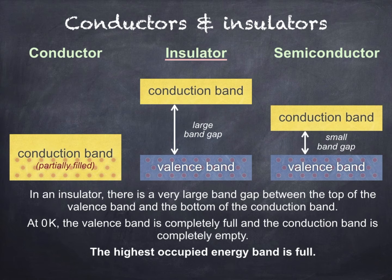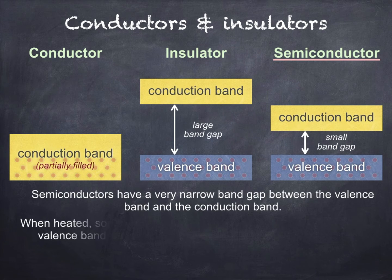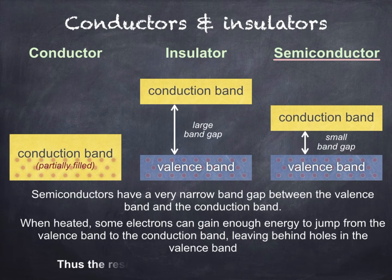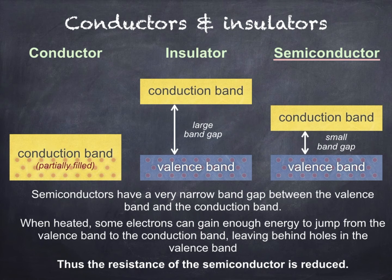Finally, semiconductors have a very narrow band gap between the valence band and the conduction band. Like insulators, at 0 Kelvin the valence band is completely full and the conduction band is completely empty. But since the band gap is so small, as temperature rises, some electrons can gain enough energy to jump from the valence band to the conduction band, leaving behind holes in the valence band. As temperature increases, the resistance of the semiconductor is reduced.